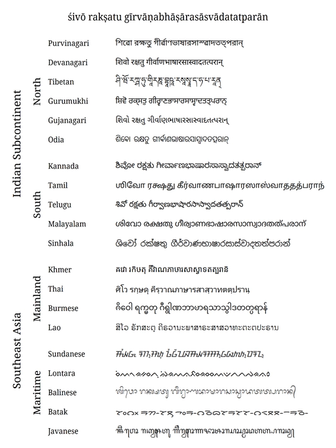See also: Devanagari transliteration, International Alphabet of Sanskrit Transliteration, National Library at Kolkata Romanization, Bharati Braille — the unified Braille assignments of Indian languages — and the Indus script, the earliest writing system on the Indian subcontinent. Also ISCII, the coding scheme specifically designed to represent Indic scripts.